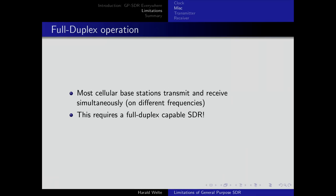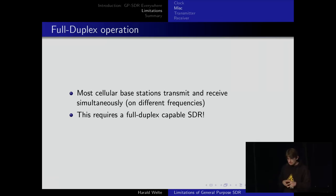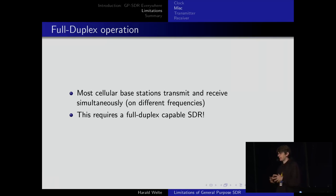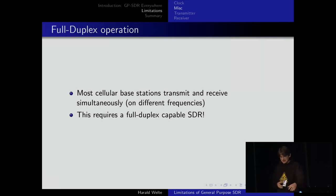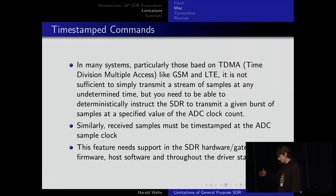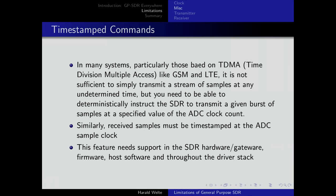Another important requirement for cellular technologies is full duplex operation — receive and transmit must be active simultaneously on different frequencies. This means, for example, you cannot use a HackRF as a GSM or LTE base station because it's not a full duplex device; it can only receive or transmit at one time. Some people ask why not combine two HackRFs. In theory you could, but then you face other requirements around synchronization, and by the time you succeed, you won't have had time to do what you originally wanted.